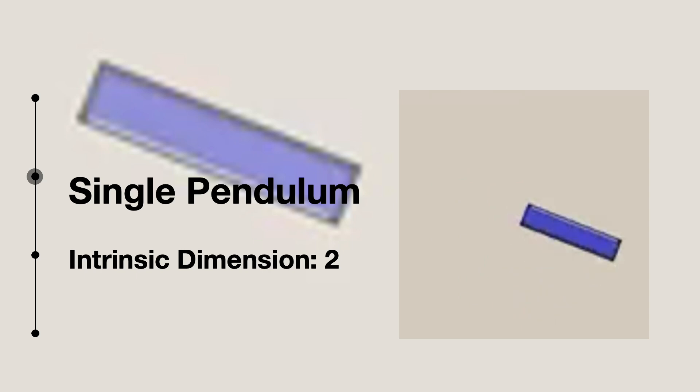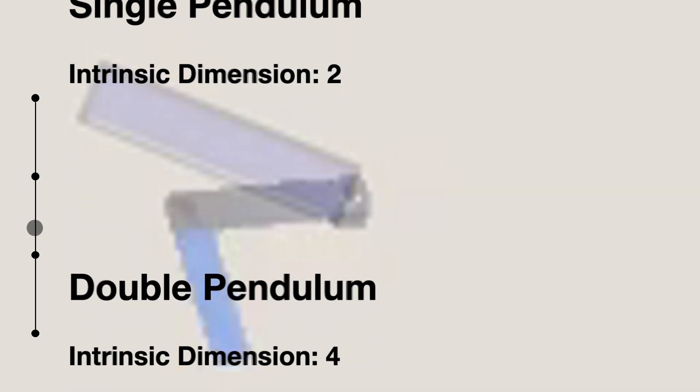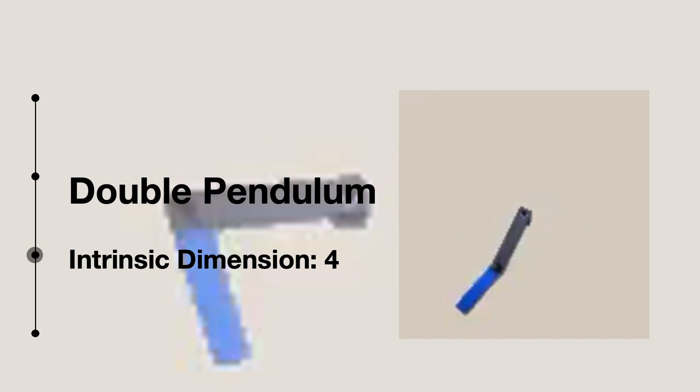The double pendulum system has an intrinsic dimension of 4 and displays complex dynamics where two pendulums interact with each other, both periodic and chaotic. It has four equilibrium states, one stable and three unstable.